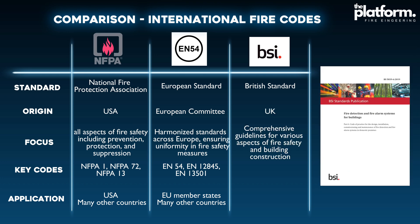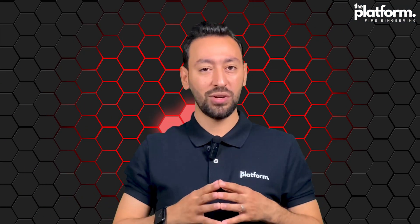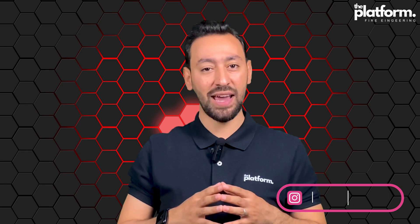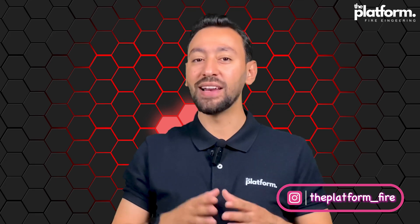British Standards, developed by the British Standards Institution, provide comprehensive guidelines for various aspects of fire safety and building construction. Key standards include BS5839, and it is mandatory in the UK.